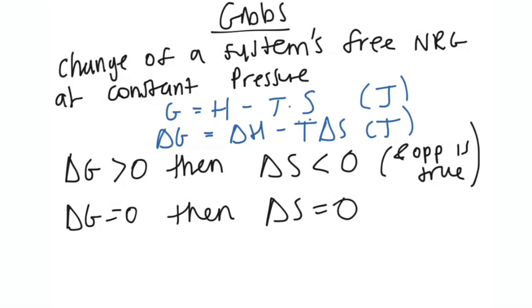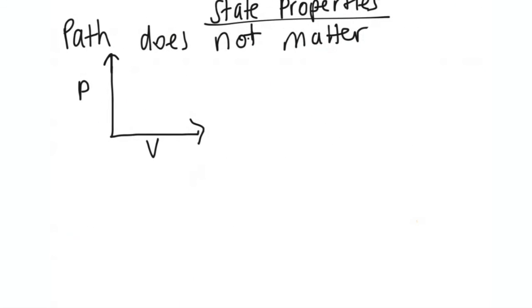So another way you can think about it is that when a chemical reaction happens, the Gibbs free energy is the energy associated with the chemical reaction. And it's that energy that can do work. So yeah, it's just another way of thinking about what Gibbs actually is.